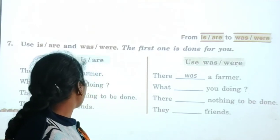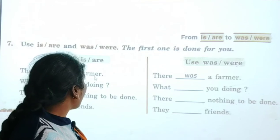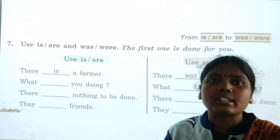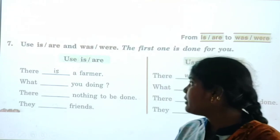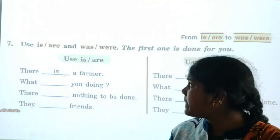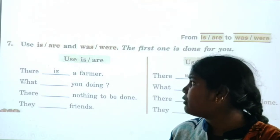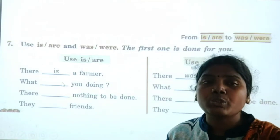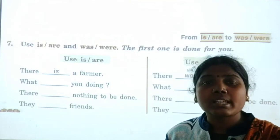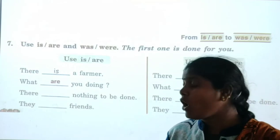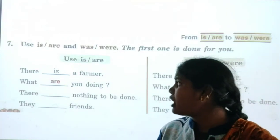The first one is done: 'There is a farmer.' 'Farmer' is third person singular, so in simple present tense we write 'is.' Second: 'What ___ you doing?' 'You' is second person plural, so we write 'are' — 'What are you doing?'